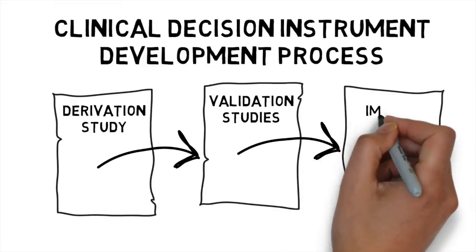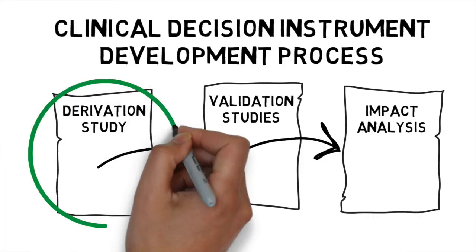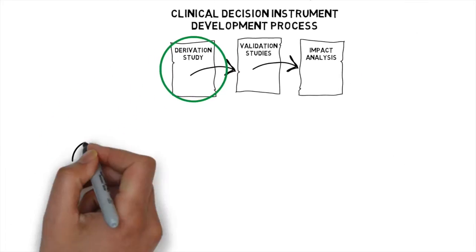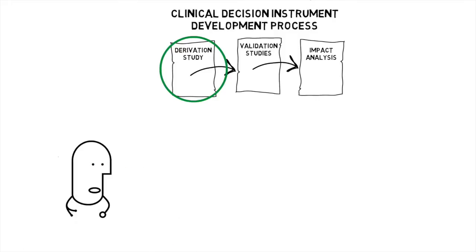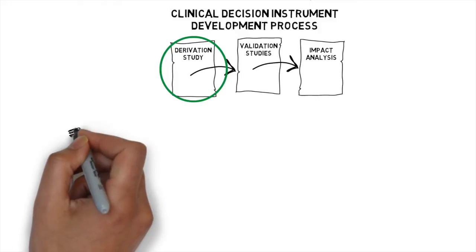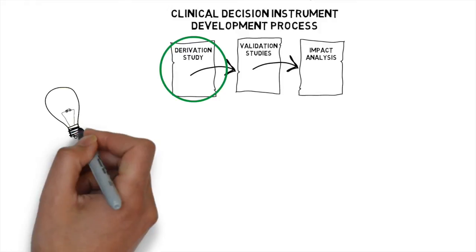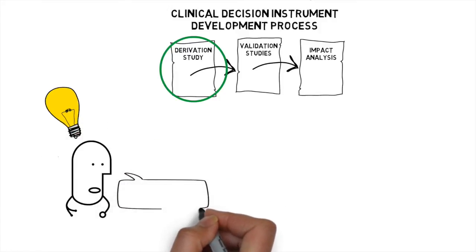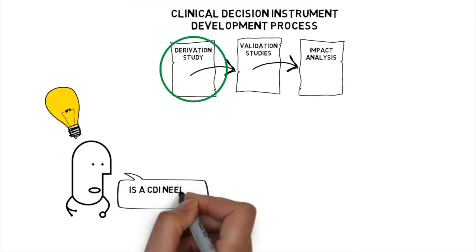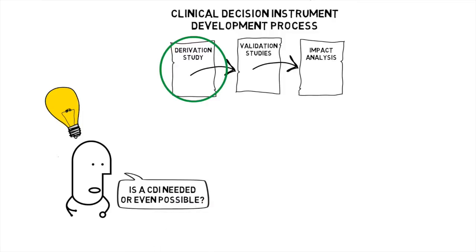It's important to pay attention to the major limitation of the derivation study. A derivation study usually begins because somebody somewhere who's brilliant has a great idea — they see some need, some practice variation, or unnecessary tests or treatments being done. Early on, the researcher should think to themselves: is a CDI actually possible? And sometimes it's not, either because of the type of illness being investigated, the type of patient, or the type of environment being worked in.